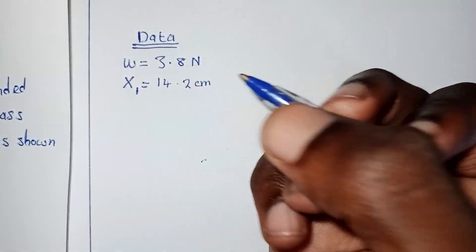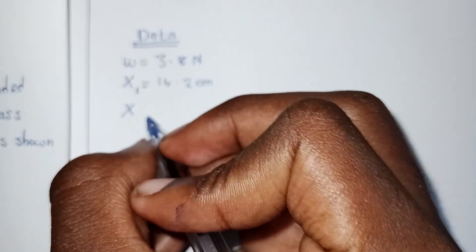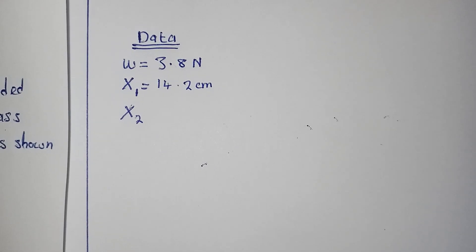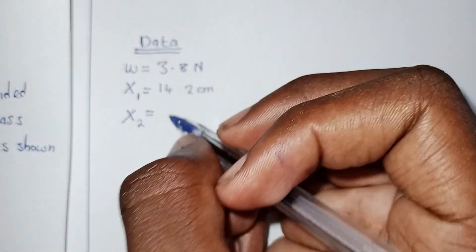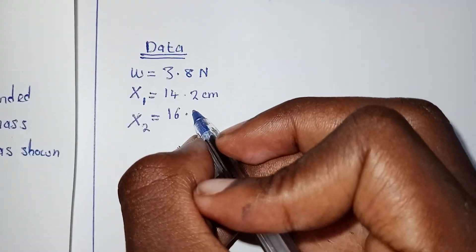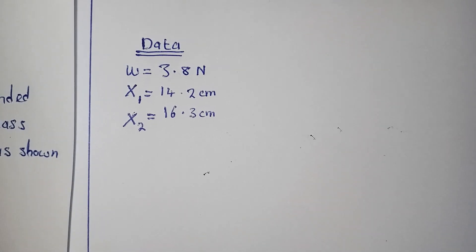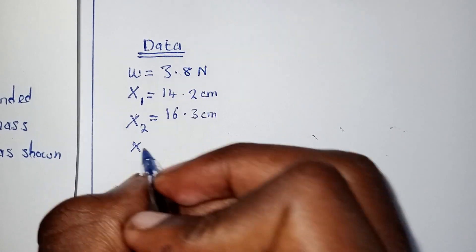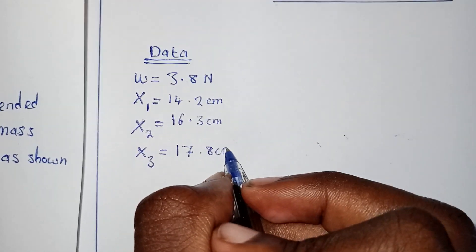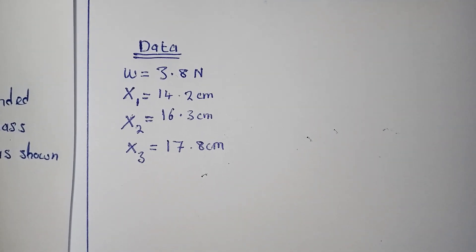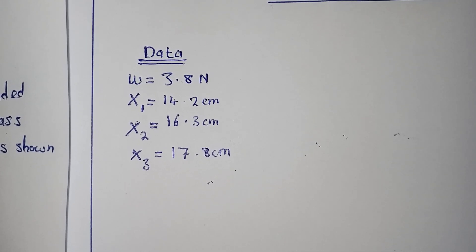A weight of 3.8 newtons was hung, so we are going to experience an extension in the direction of the weight — downwards — and that is going to be called our extension 2, which was 16.3 centimeters. Then another weight was applied — they haven't specifically told us which one — but after it was applied our extension extended to 17.8 centimeters. Note that centimeters are not the standard units used in physics. The question is saying: show that the spring constant is 1.8 newtons per centimeter.